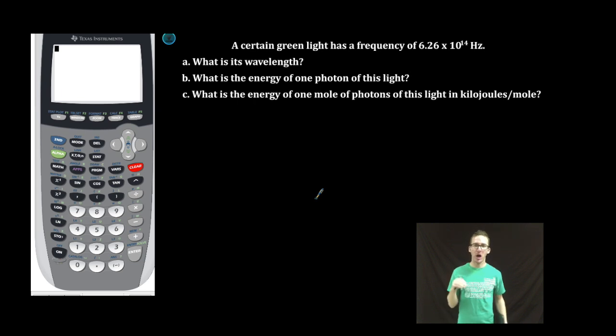People, who's ready to step it up a notch? We're told a certain green light has a frequency of 6.626 times 10 to the 14 hertz. First thing we want to know is what is its wavelength?